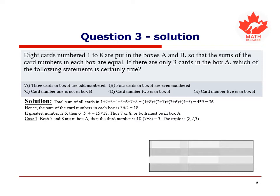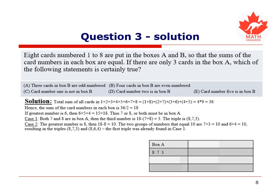Case 1. The greatest two numbers are 7 and 8. Then, clearly, the third number is 18 minus the sum of 8 and 7, which is 15. So, 18 minus 15 is 3. Thus, the triple is 8, 7, 3. Case 2. The greatest number is 8. Then, the sum of the other two numbers is 18 minus 8, which is equal to 10.